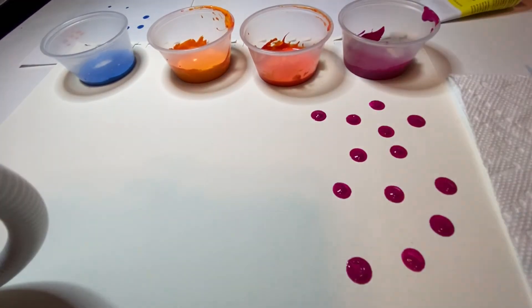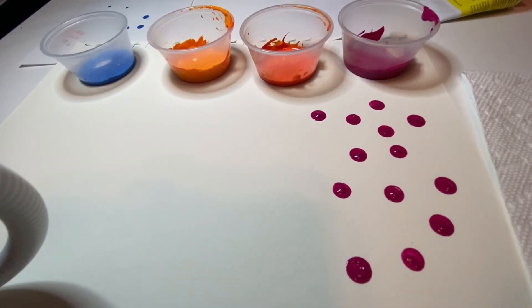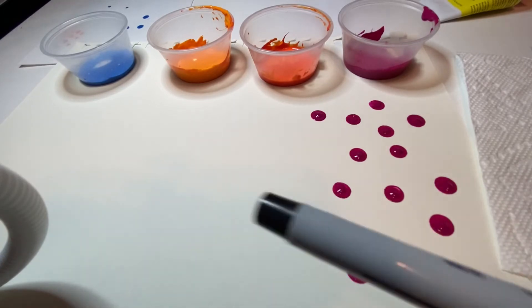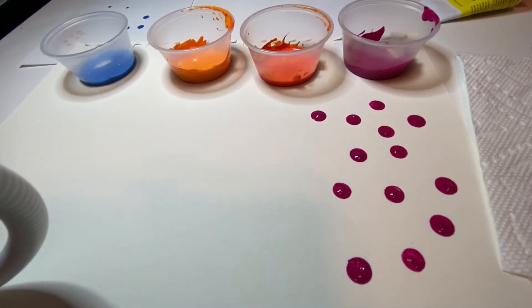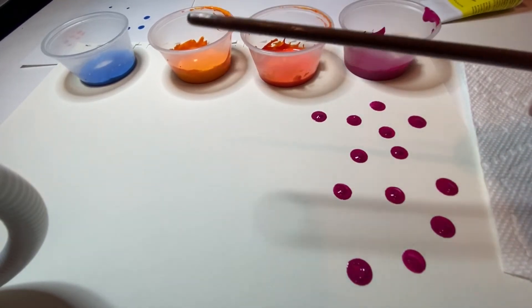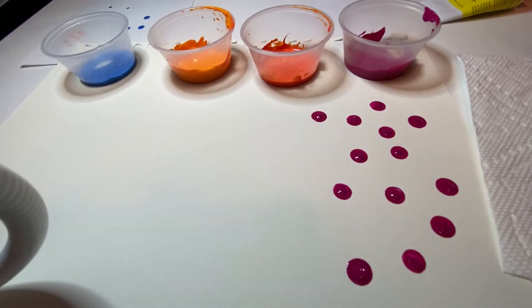If you do it at too much of an angle though or if you dip your paint too far in and then do it at too much of an angle, what you're going to do is you're going to skew your dot so it's going to be more of an oval or it might even have just a trail of paint on the side where you've tilted it. So try and keep it straight up and down.